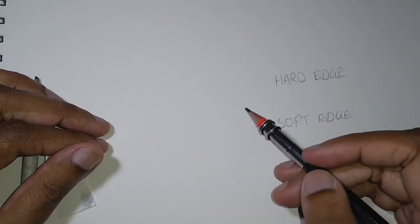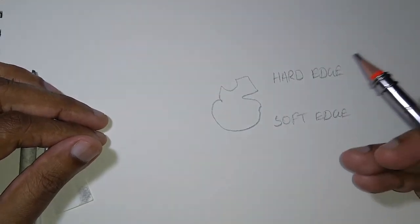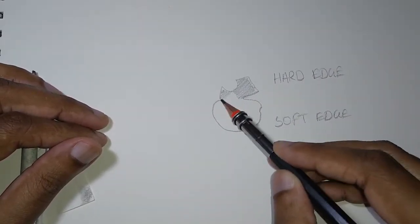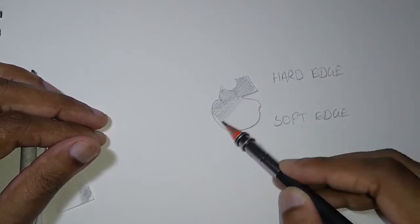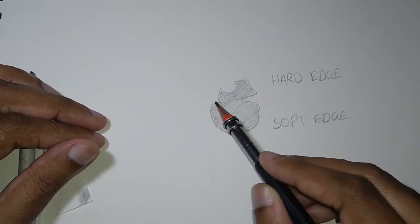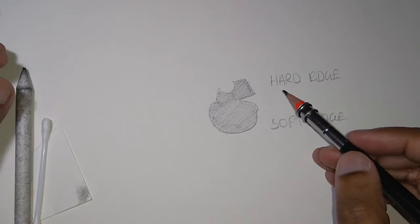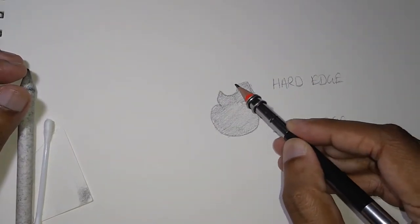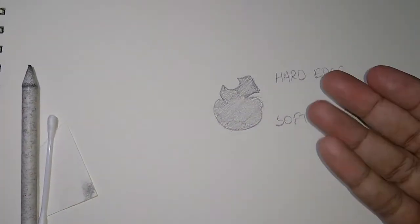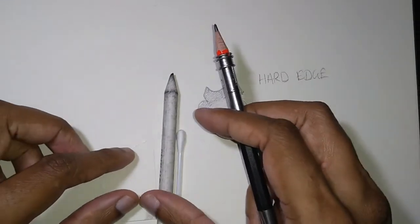Let's draw a shadow shape. Hard edge is when the outline of the shadow is clearly visible. Soft edge is when the transition between light and dark is a little more subtle. I know everyone uses a sphere, but let me just draw a shadow shape to demonstrate.